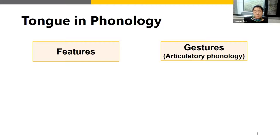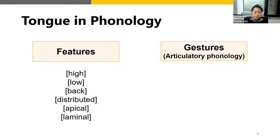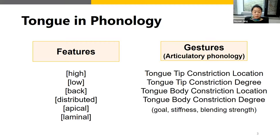Tongue-related features include high, low, back — related to the position of the tongue — and distributed, apical, and laminal — related to the participation or movement orientation of a specific part of the tongue during articulation. Tongue-related gestures include tract variables of constriction location and constriction degree for the tongue tip and the tongue body separately, including goals, stiffness, and blending strength as their values.